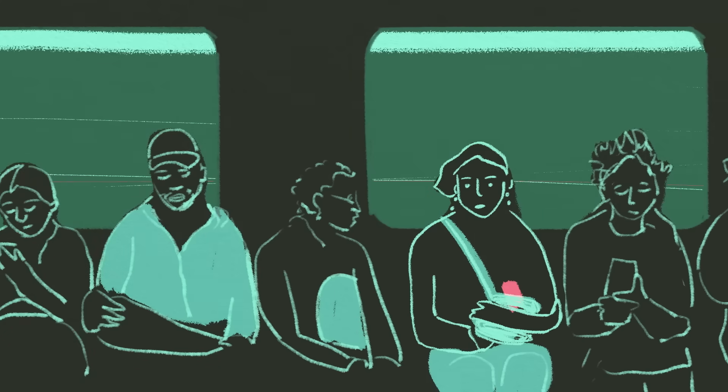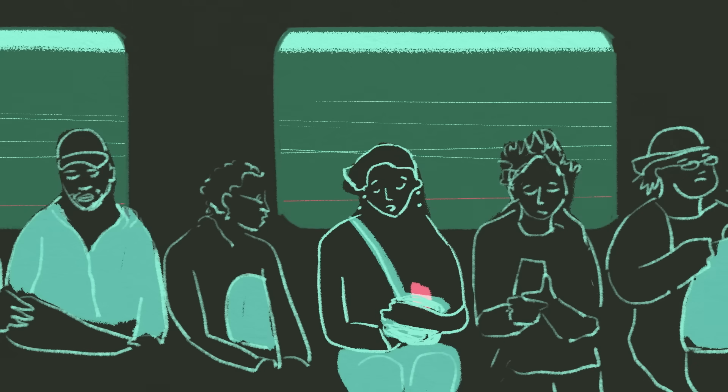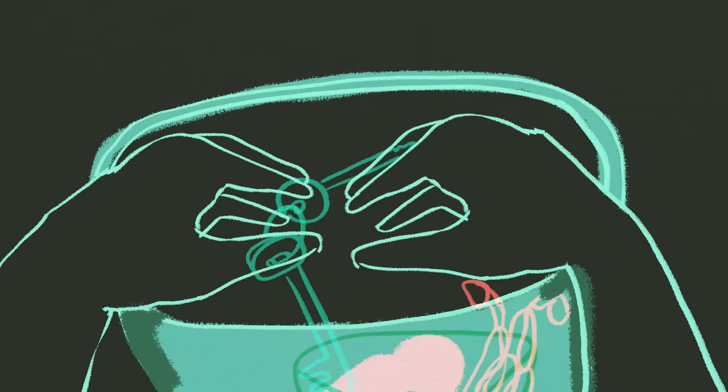When someone is repeatedly using a substance and their body has adapted to its presence, they may develop dependence, where the drug is necessary for them to function comfortably. Meanwhile, repeated use can decrease the influence of the brain's cortex, which is responsible for driving deliberate decision-making and limiting impulsive behaviors.